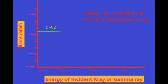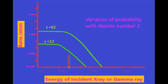As energy of X-ray increases in diagnostic range, the probability of Rayleigh scattering decreases. Probability of Rayleigh scattering increases with atomic number Z. In this graph, probability of lead and carbon are shown for a particular energy.